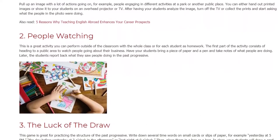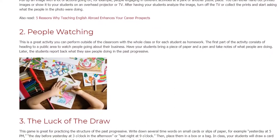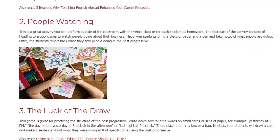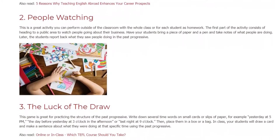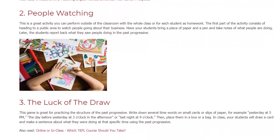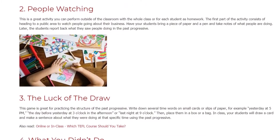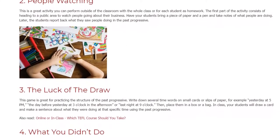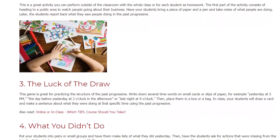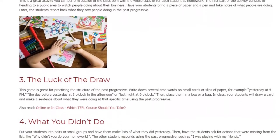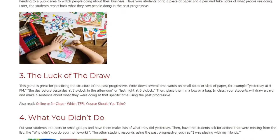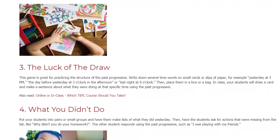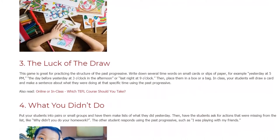Activity 3: The Luck of the Draw. This game is great for practicing the structure of the past progressive. Write down several time words on small cards or slips of paper, for example 'yesterday at 5 pm,' 'the day before yesterday at 3 o'clock in the afternoon,' or 'last night at 9 o'clock.' Then place them in a box or a bag. In class, your students will draw a card and make a sentence about what they were doing at that specific time using the past progressive.